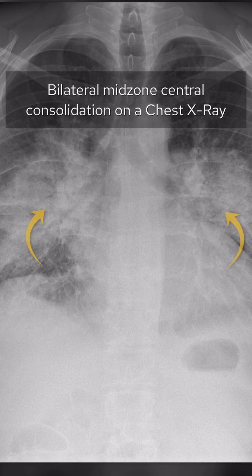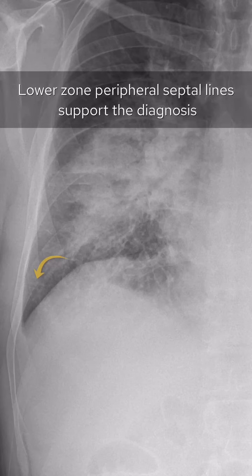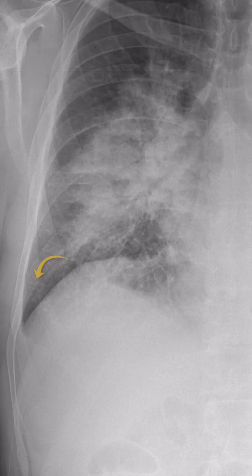Bilateral mid-zone central consolidation on a chest x-ray is highly suggestive of pulmonary edema. Lower zone peripheral septal lines support the diagnosis.